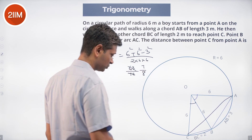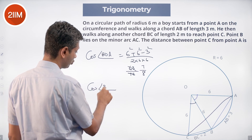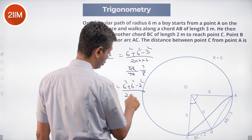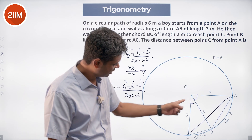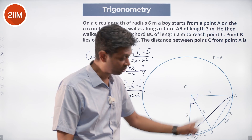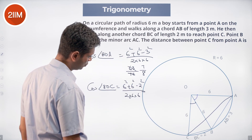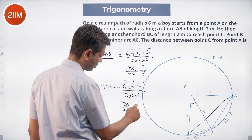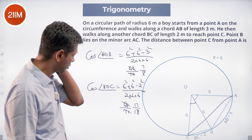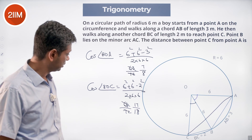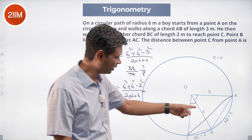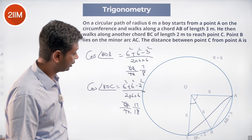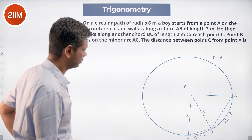Now I'll find cos of angle BOC: 6² + 6² − 2² divided by 2 × 6 × 6. That's 72 − 4 = 68, divided by 72, which is 17/18. Notice: cos(BOC) = 17/18 is higher than cos(AOB) = 7/8, which makes sense — the smaller angle has the higher cosine.